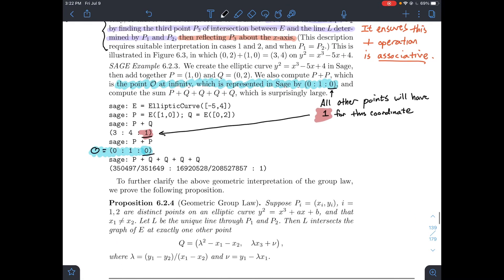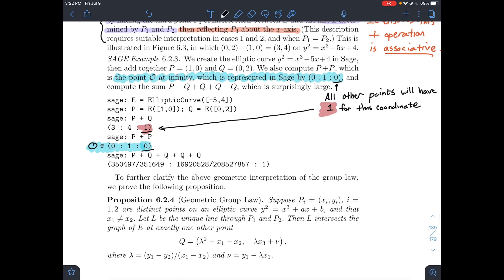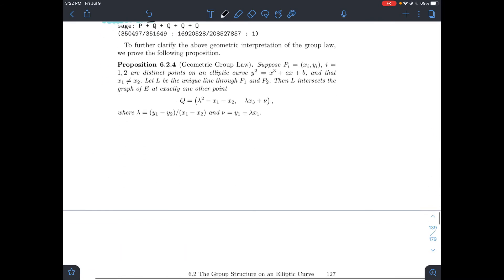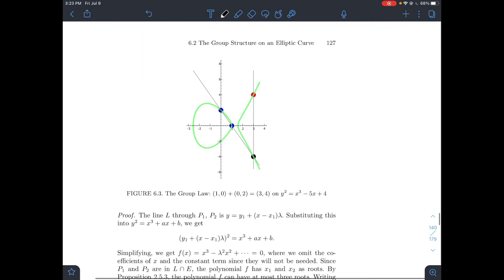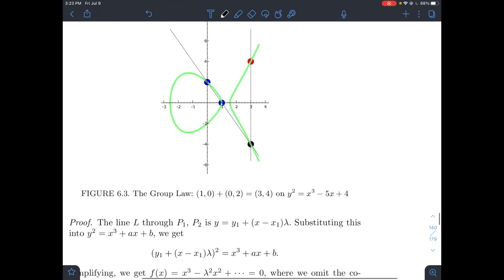And then when you do p plus p, you see that you get the point at infinity back right here. And then SAGE can, you could tell it to add p plus q plus itself or times itself four times. Or, sorry, p plus q added to itself four times, I guess is a better way to say that. And SAGE just can do all that good stuff. And so if I scroll down a little bit, here's a picture of actually what's going on to demonstrate that group law here.